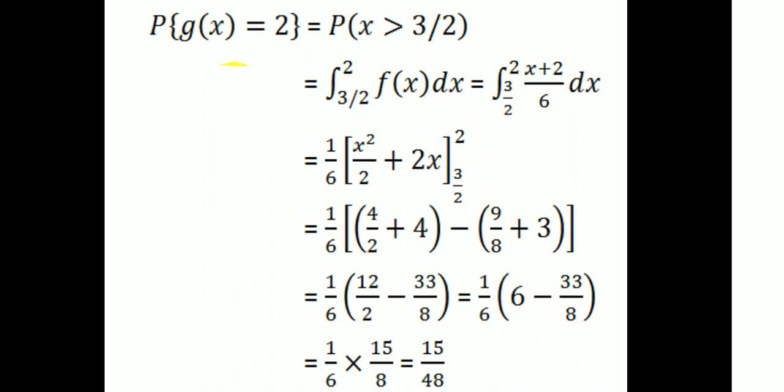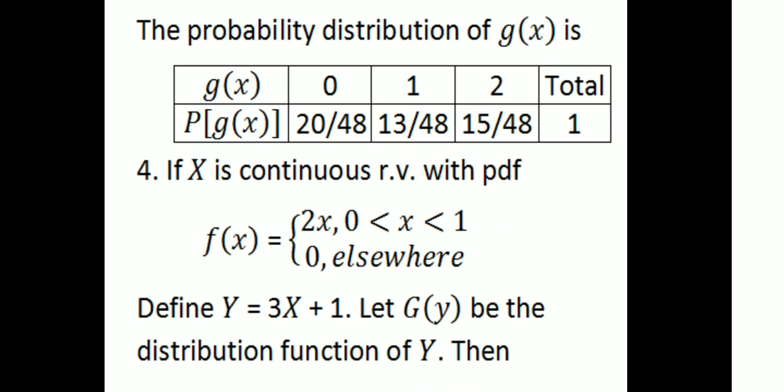P(g(x) = 2) = P(x > 3/2) = integral from 3/2 to 2 of (x+2)/6 dx = (1/6)[x²/2 + 2x] from 3/2 to 2 = (1/6)(6 − 33/8) = (1/6)(15/8) = 15/48. So the probability distribution table is: g(x) = 0, 1, 2 with probabilities 20/48, 13/48, 15/48. The total is 20+13+15 = 48, i.e., 48/48 = 1.